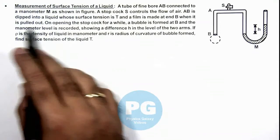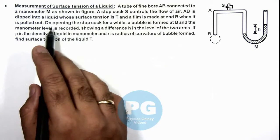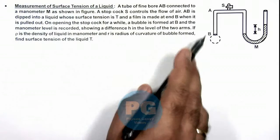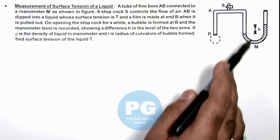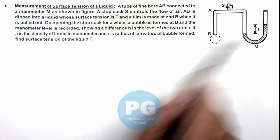On opening the stop clock for a while, a bubble is formed at B and the manometer level is recorded, in which the level difference is h.